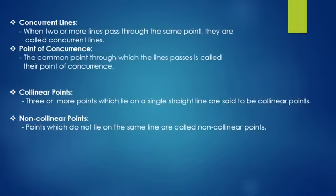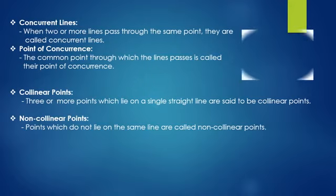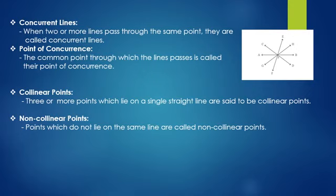Concurrent lines. When two or more lines pass through the same point, they are called concurrent lines. In the figure shown beside, all the lines are concurrent lines because they are passing through the same point.